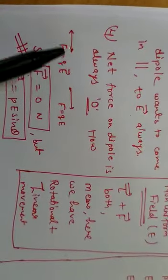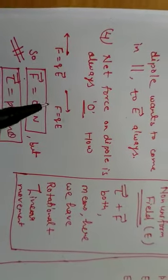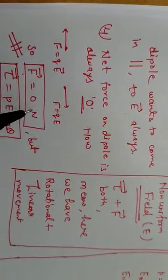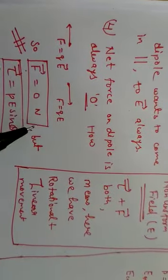The direction of both forces is equal and opposite, so the net force on any dipole in a uniform electric field will always be zero.